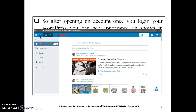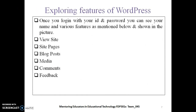Here you can see various features given by WordPress. To create a website you have to click on My Site. The features include View Site, to view your created site with various pages; Site Pages, to add more pages to your website; Blog Post, for posting a blog; Media, for adding media; and Comments, where you can also take feedback from students or faculty for whom you are creating the website.